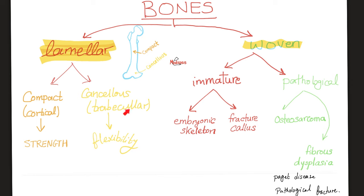Compact bone provides strength; cancellous bone provides flexibility. Woven bone is immature, such as embryonic skeleton or fracture callus, or pathological — seen in osteosarcoma, fibrous dysplasia, Paget's disease, and pathological fractures. So in Paget's disease we will find woven bone, and possibly some pathological lamellar bone.